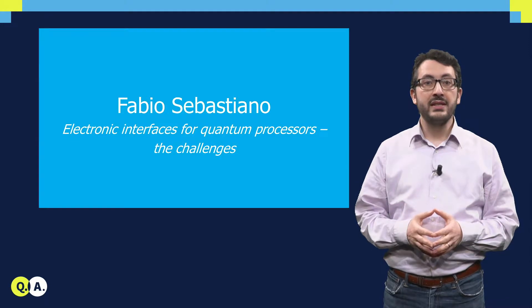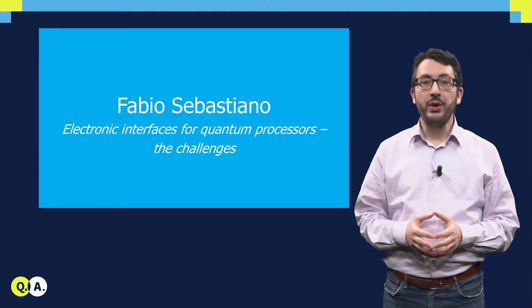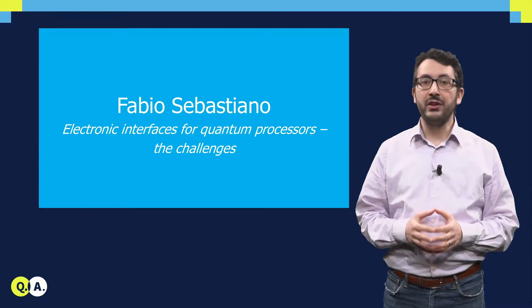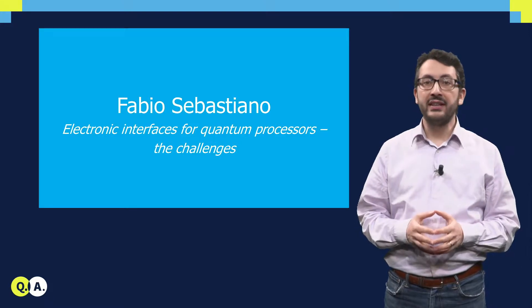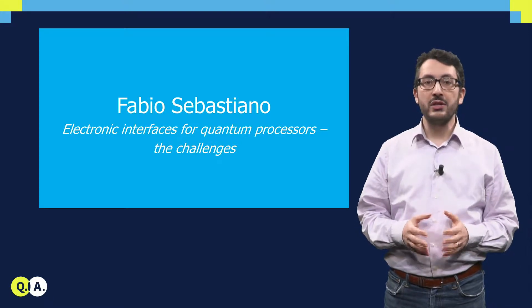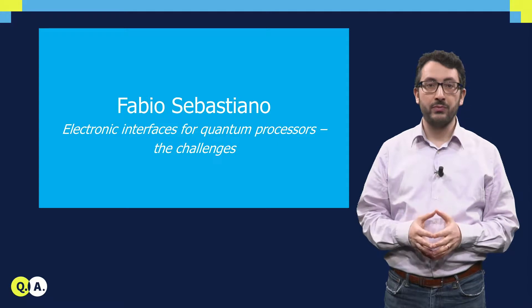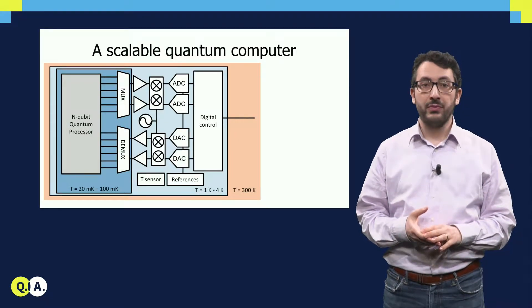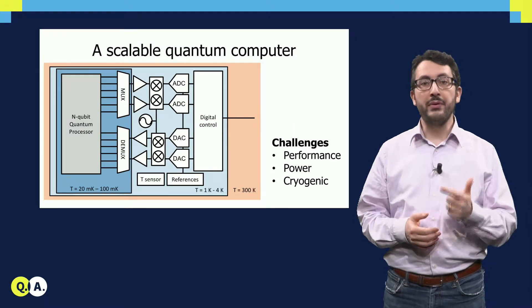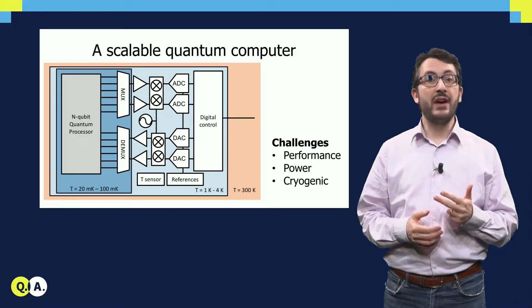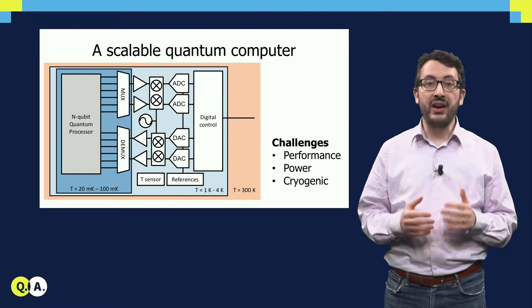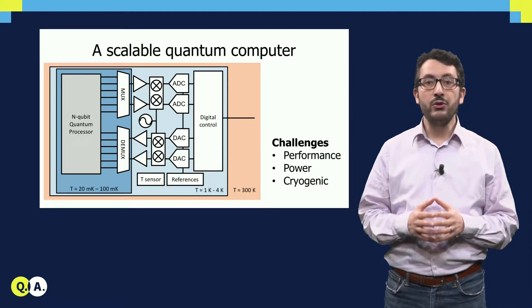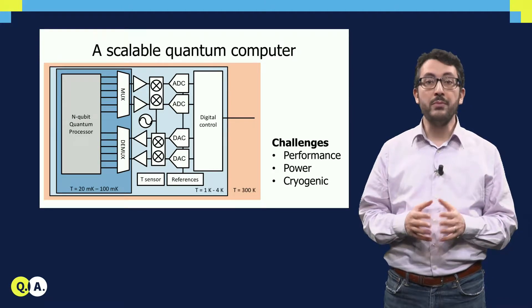We have seen that to build a scalable quantum computer, we need to build a complex electronic interface operating at cryogenic temperature as close as possible to the quantum processor. To do that, we need to meet a number of challenges in terms of performance, power dissipation, and of course we must find electronics that can work at cryo-temperatures. Let's look now to some of these issues in more details.